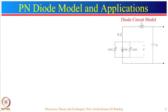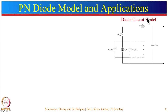The diode circuit model represents the device as a non-linear current source in parallel with two types of capacitance: the junction capacitance and the diffusion capacitance. This is connected in series with a series resistor that accounts for losses in the depletion region. Since the diode must be packaged, a capacitor Cp is included to account for packaging capacitance, and an inductor Lp is included to account for bonding wire inductance.